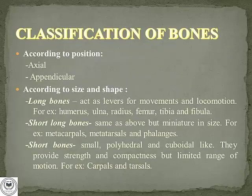Now let us see the classification of bones. According to position, as discussed earlier, they are of two types: axial and appendicular. According to shape and size, first are long bones. They act as levers for movement and locomotion. Examples include the humerus, ulna, radius, femur, tibia, and fibula — the bones which form your upper and lower limbs, that is your arms and legs.